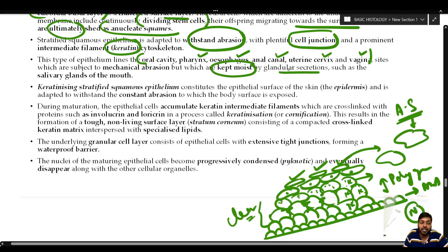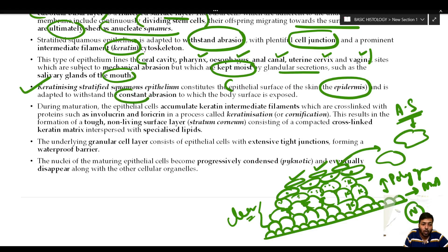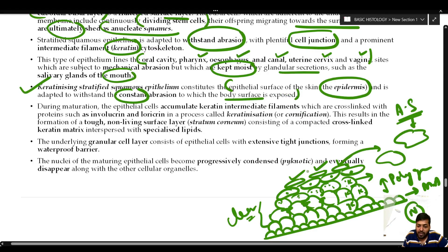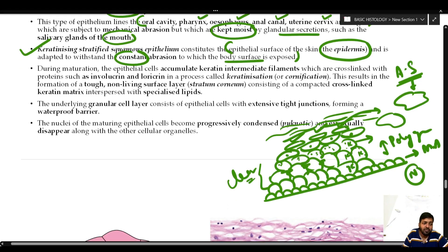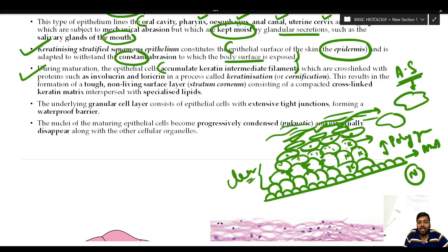Stratified squamous epithelium lines those places subject to mechanical abrasion: the oral cavity, pharynx, esophagus, anal canal, uterine cervix, and vagina. Some of these areas are kept moist by glandular secretion such as the salivary glands. The keratinizing stratified squamous epithelium constitutes the surface of the skin — the epidermis — adapted to withstand constant abrasion. During maturation, epithelial cells accumulate keratin intermediate filaments cross-linked with proteins such as involucrin and loricrin — a process called keratinization or cornification — forming the tough non-living stratum corneum.